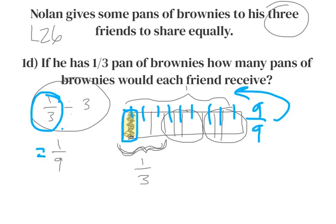We started with three pans of brownies — if he had three pans, each friend got one pan. Then we moved to one pan of brownies, so he had one pan to share with three friends, and that gave each friend one third. Then we went to one half — he had one half of a pan. And now we're here at one third. The three people sharing the brownies stayed the same, and that's why the answer became smaller.